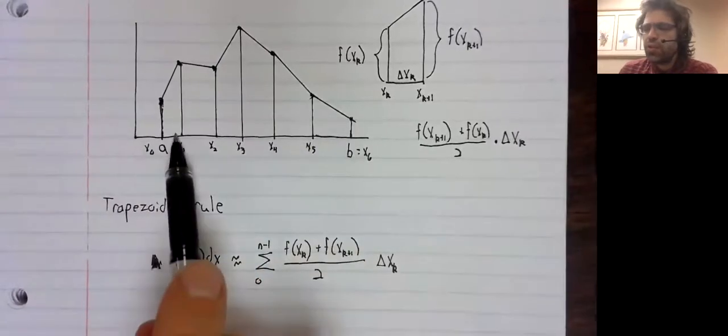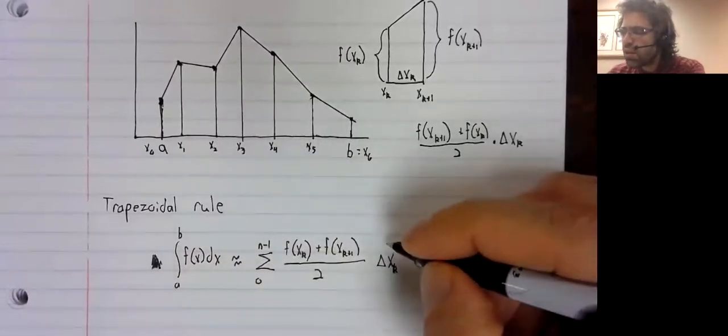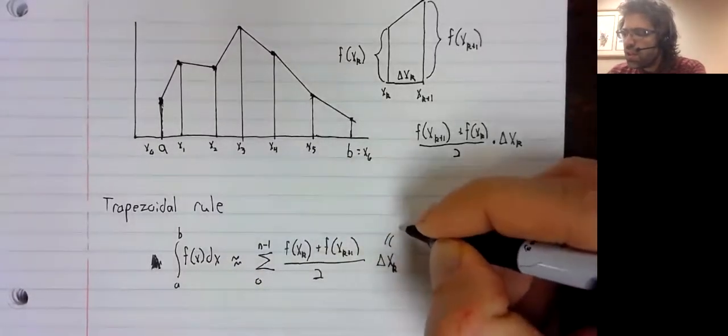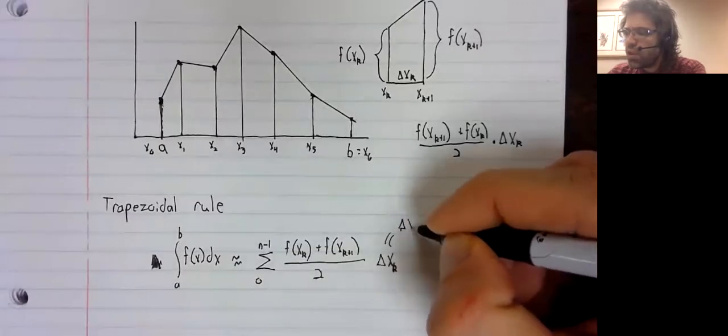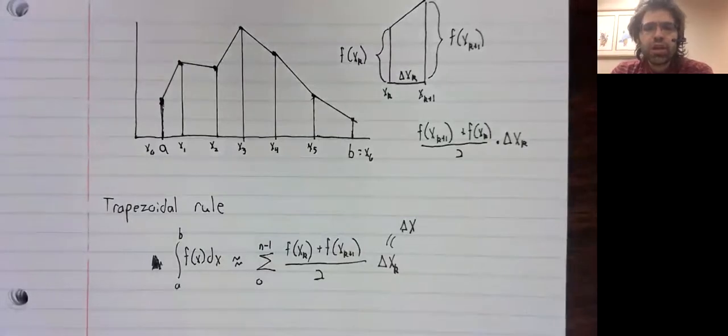However, if these little intervals are all the same length, that is to say we've got some single length delta x, then the trapezoidal rule really simplifies.